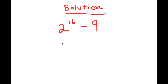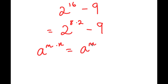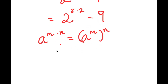The first thing I'm going to do is rewrite 2 to the power of 16 as 2 to the power of 8 times 2. The reason I did this is because if I have something in the form a to the power of m times n, this is equal to a to the power of m to the power of n. So 2 to the power of 8 times 2 is going to equal 2 to the power of 8 to the power of 2.